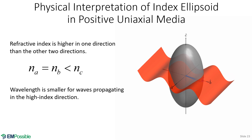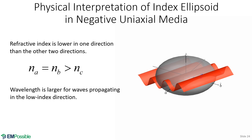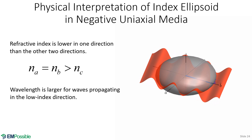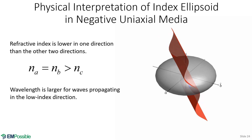For negative uniaxial media, the extraordinary axis is smaller than the ordinary axes. The same logic applies but reversed: when the wave is in the a-b plane it travels most slowly and is most compressed, whereas vertically — where the refractive index is smallest — the wave travels faster and is most spread out.